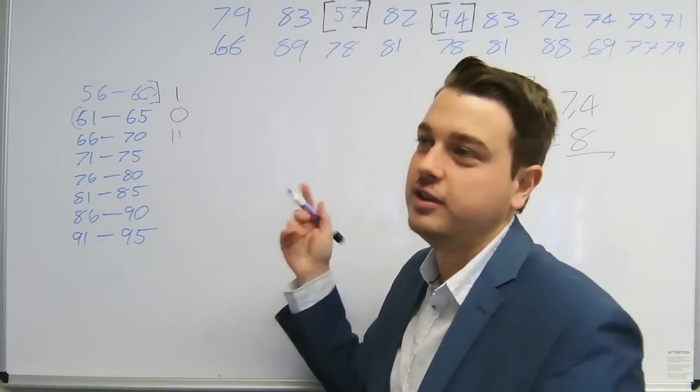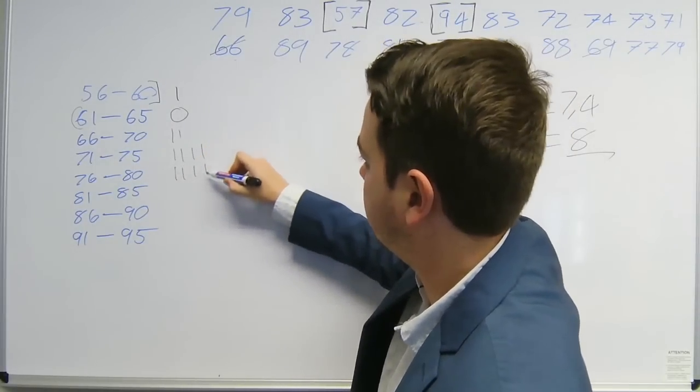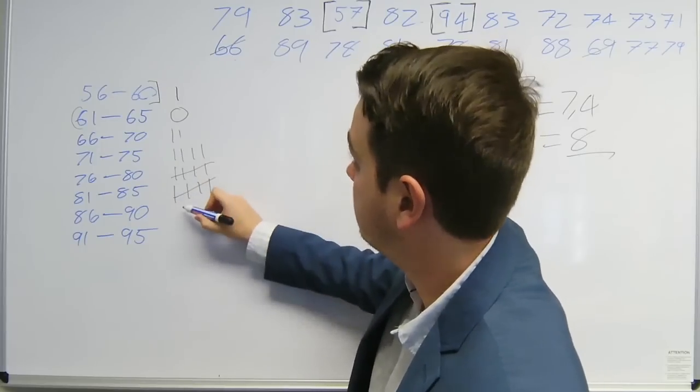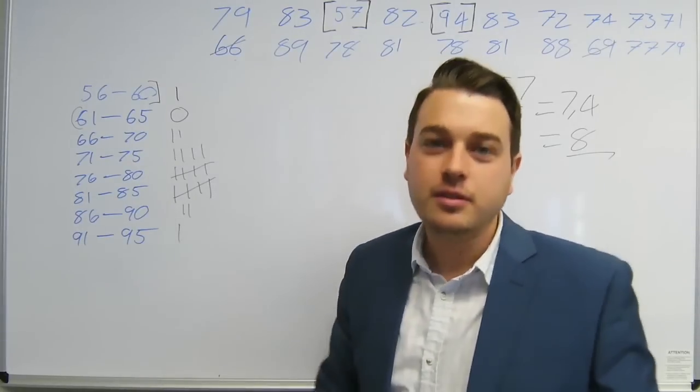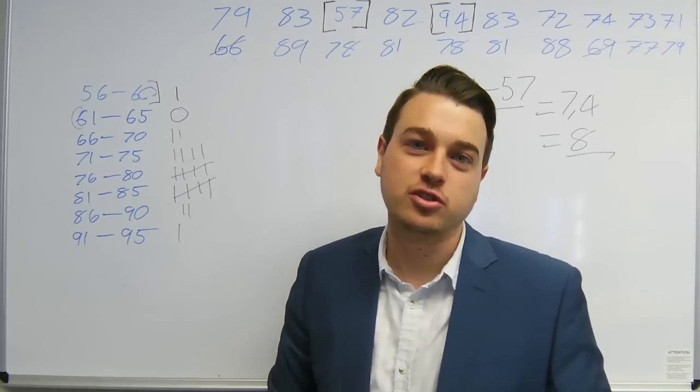If you do that for all of the data points, you get 4 in this bin, we get 5, 5, 2, and 1. Since we now know how the data is distributed in these bins, we can go and draw the histogram.